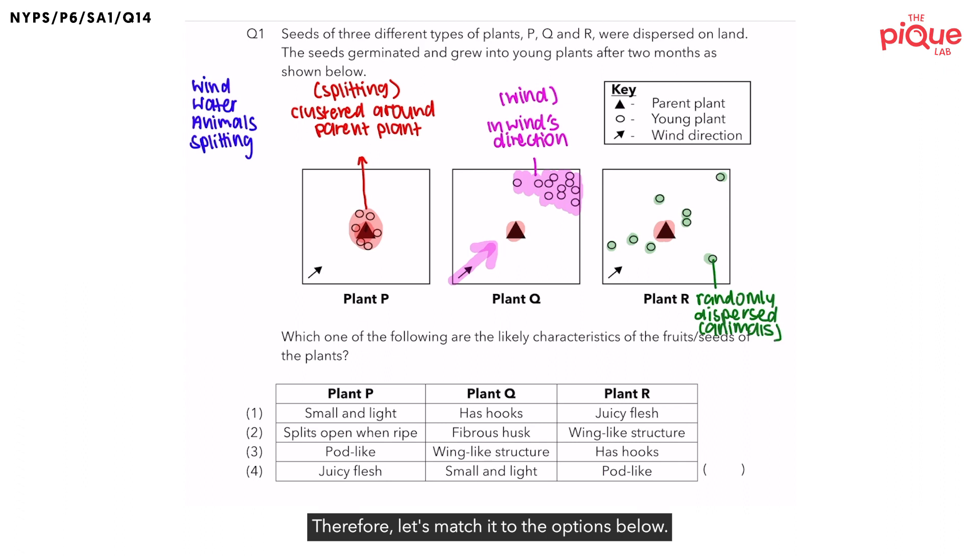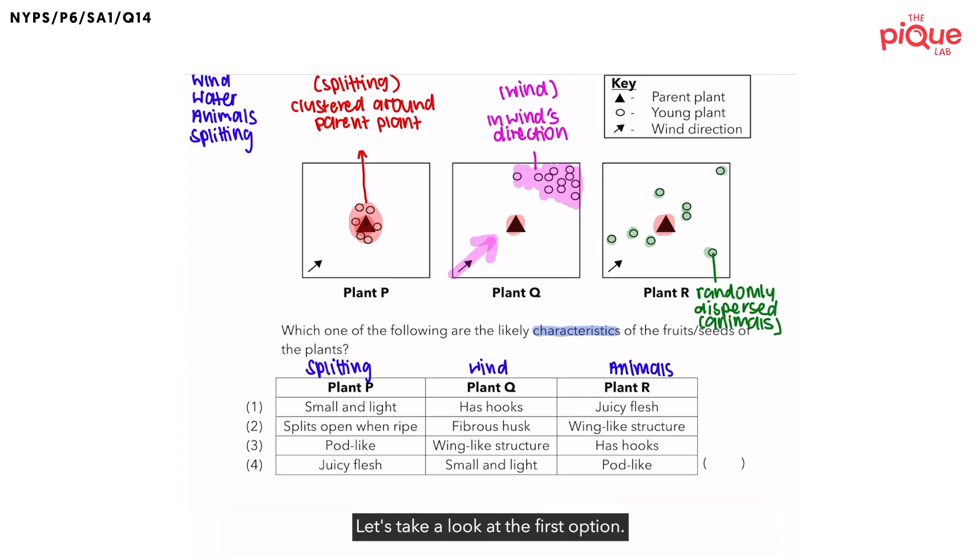Therefore, let's match it to the options below. We are now supposed to choose the characteristics of the fruits or seeds that are dispersed by that specific method. The dispersal method for plant P is by splitting, and the dispersal method for plant Q is by wind. And lastly, for plant R, it is by animals.